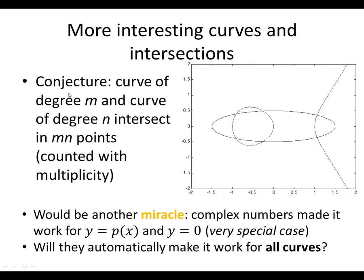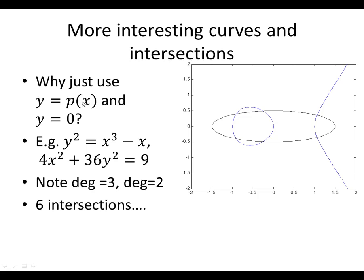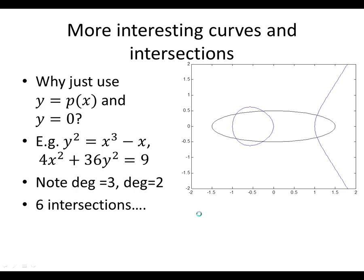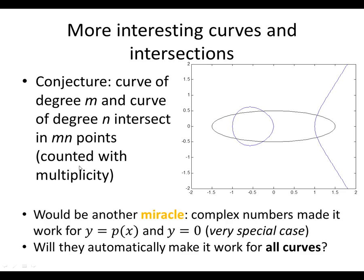Maybe that's the generalization of what we were observing with this special case. So the conjecture is a curve of degree m and a curve of degree n intersect in m times n points counted with multiplicity. Remember, if we go back to this case, if this has degree m, this guy has degree 1. So this, our theorem here really is a special case of what I'm talking about now.